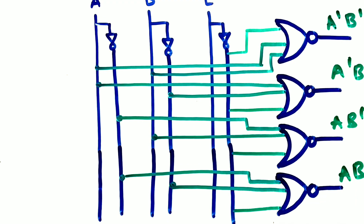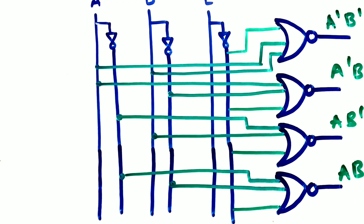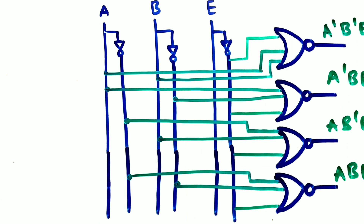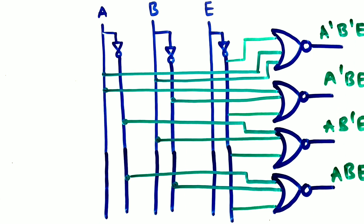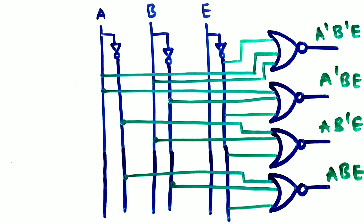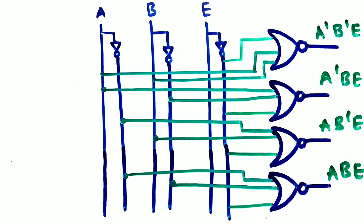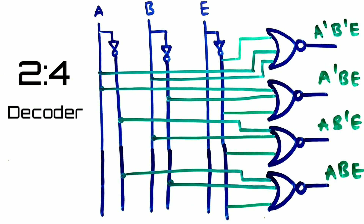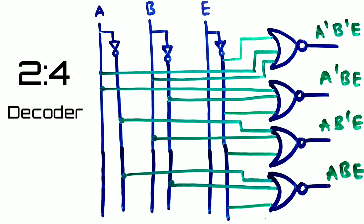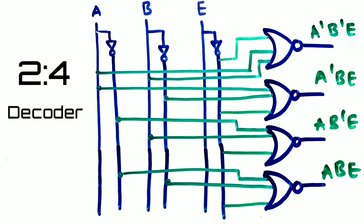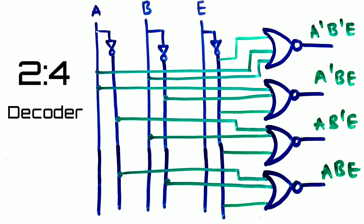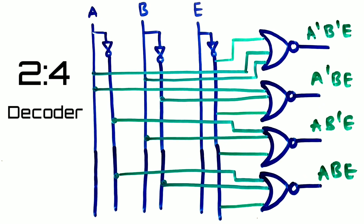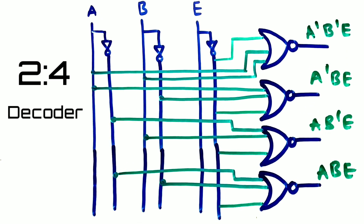Let's look at the applications of the implied gate. The implied gate is mostly used in combinational circuits. Here's an example: a 2-to-4 decoder implemented using implied gates, where the outputs are derived from implied gates.